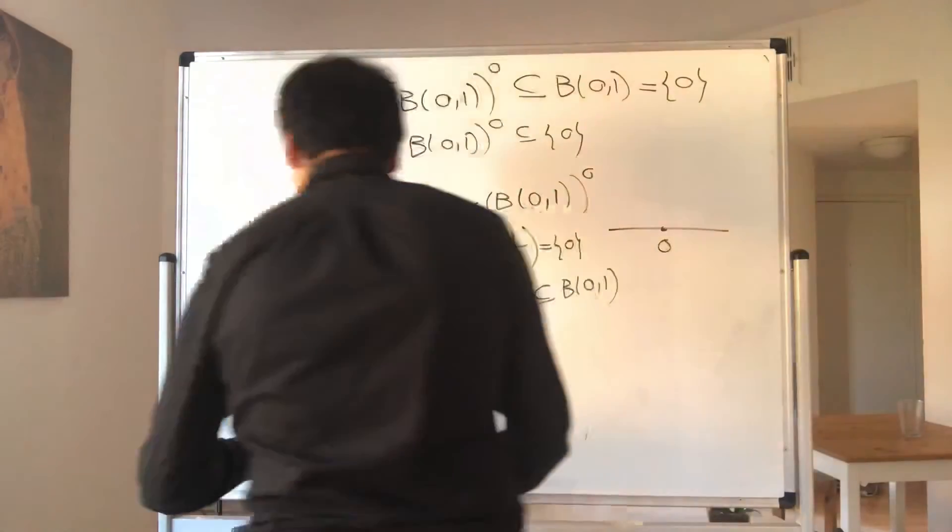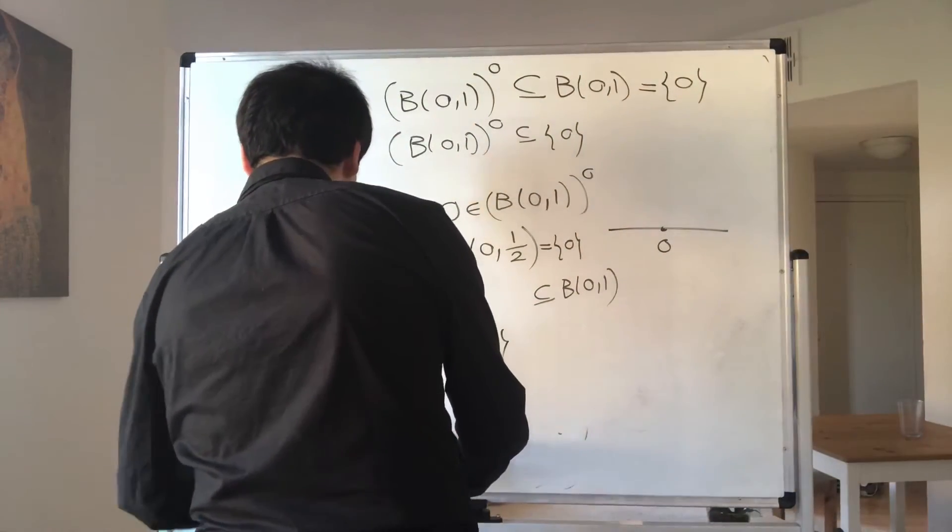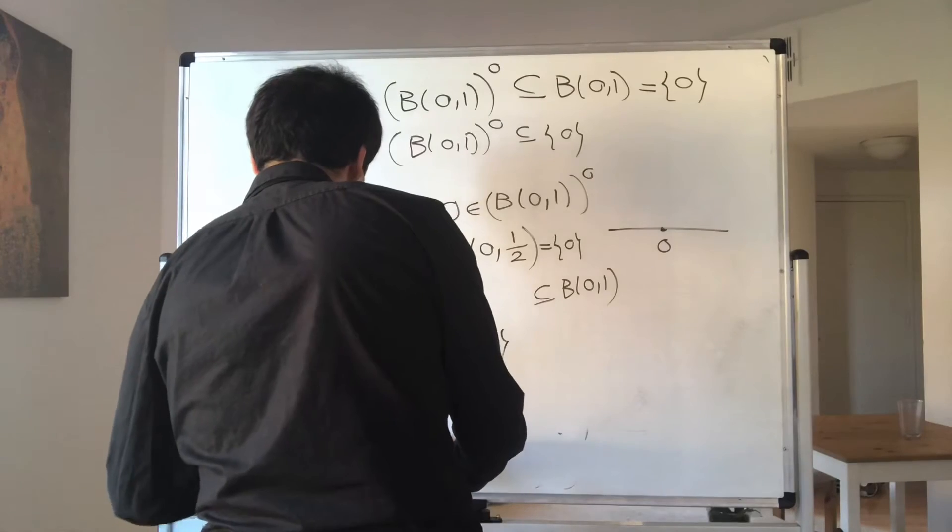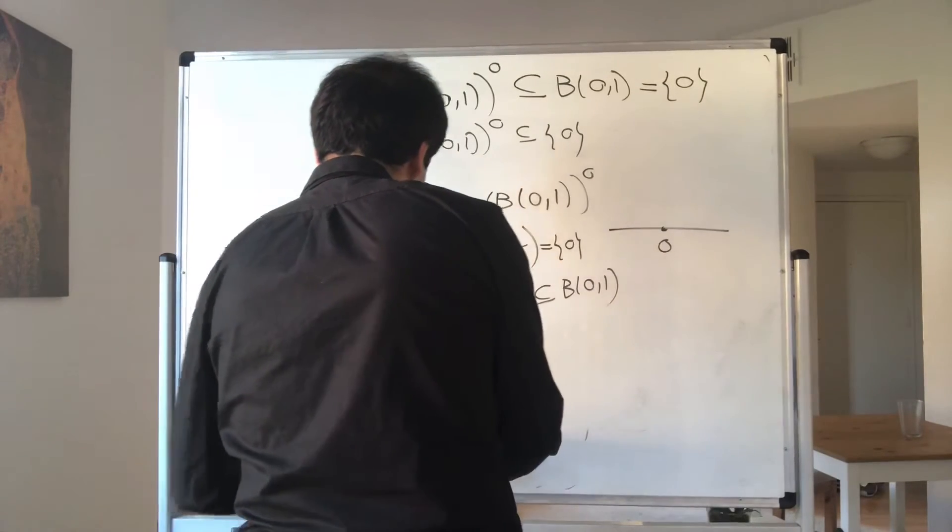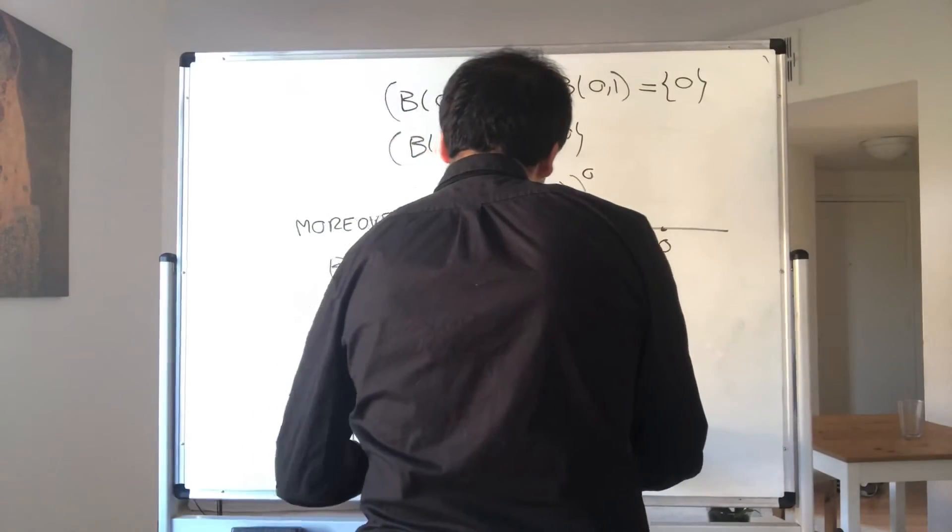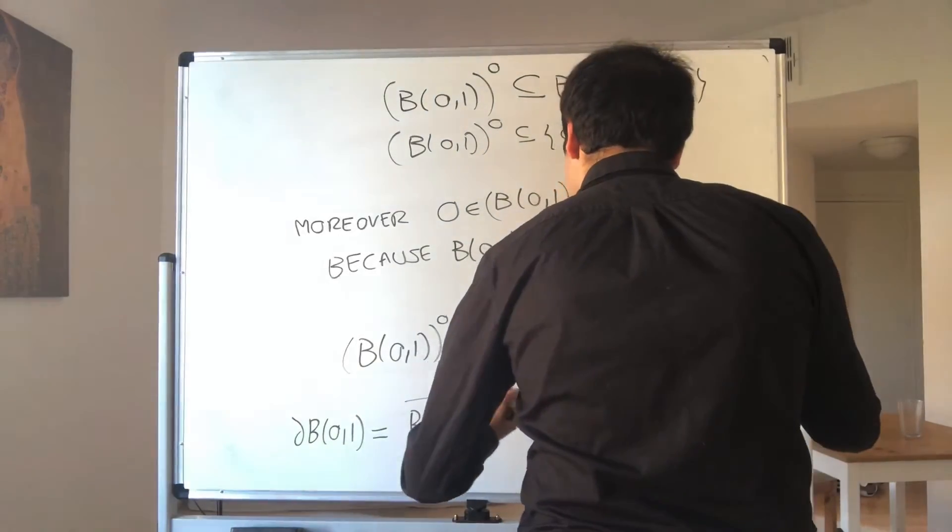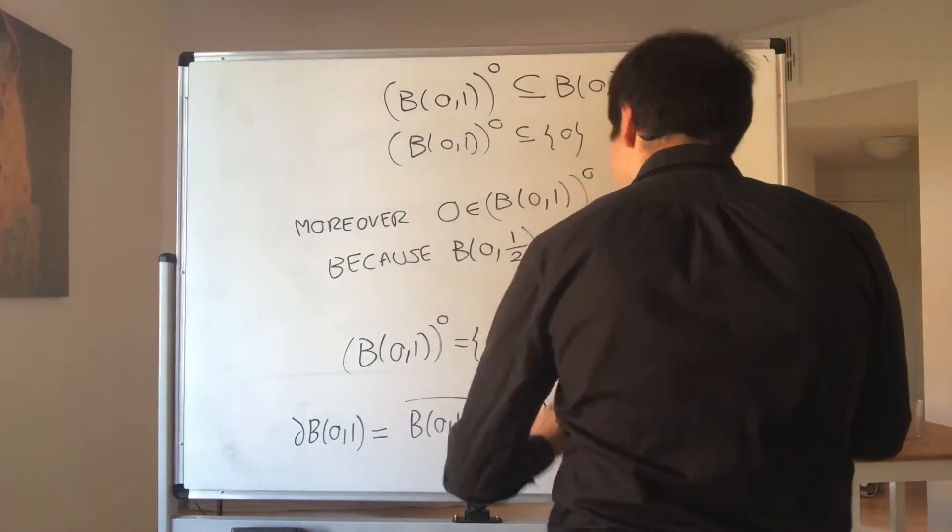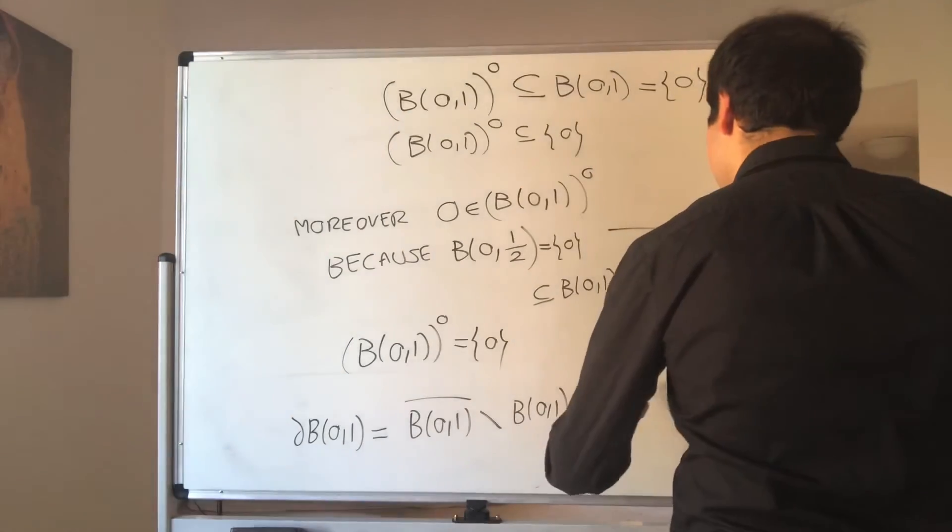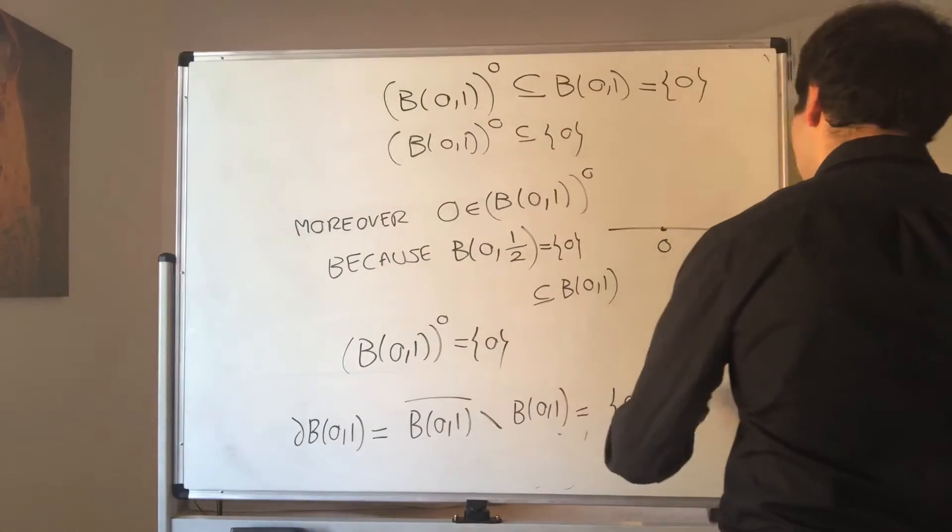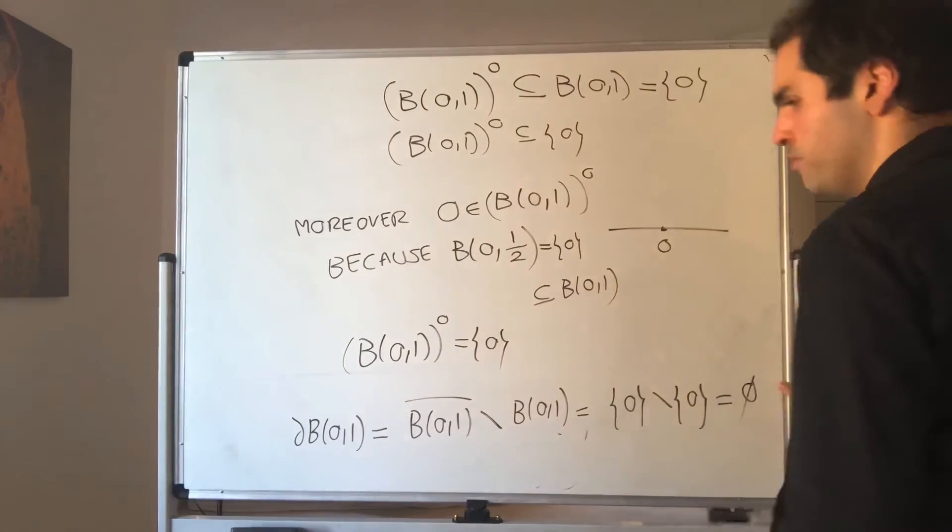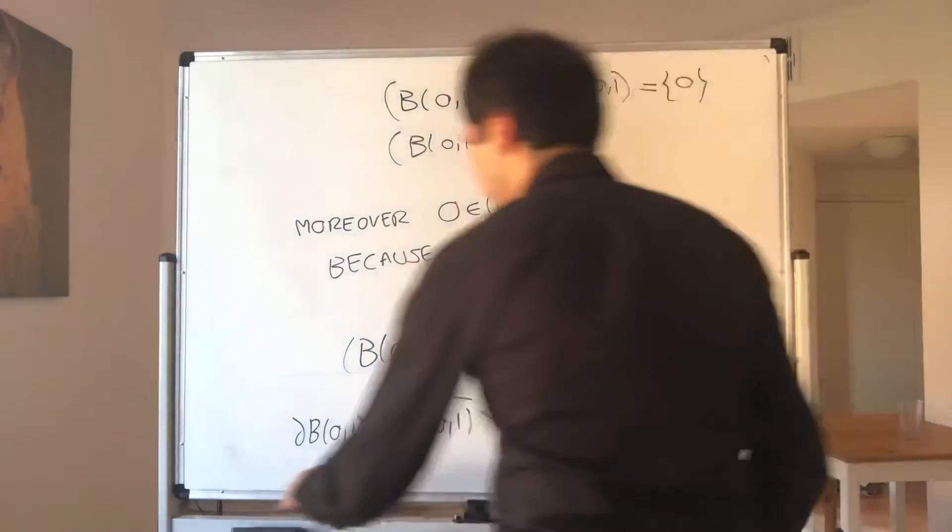Which becomes the zero set without the zero set, which is just the empty set. So the boundary is empty, but then the question is, what is the sphere?